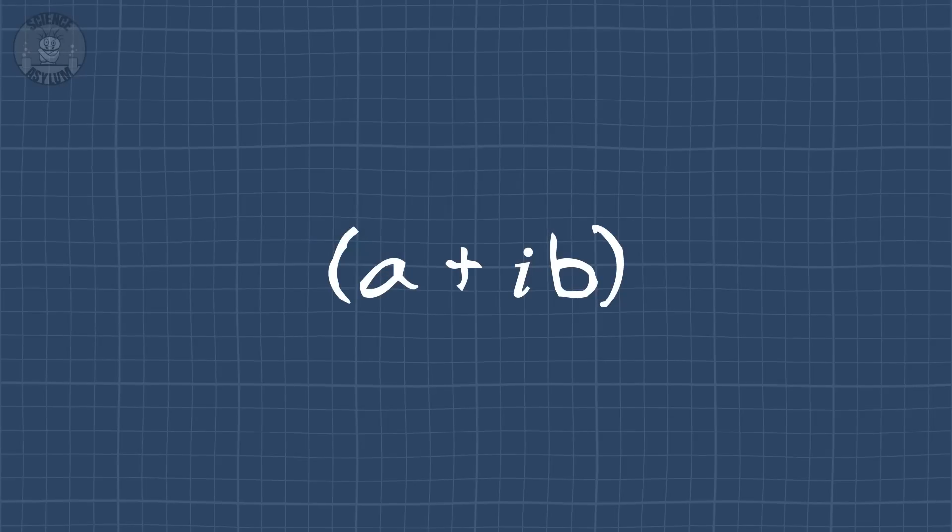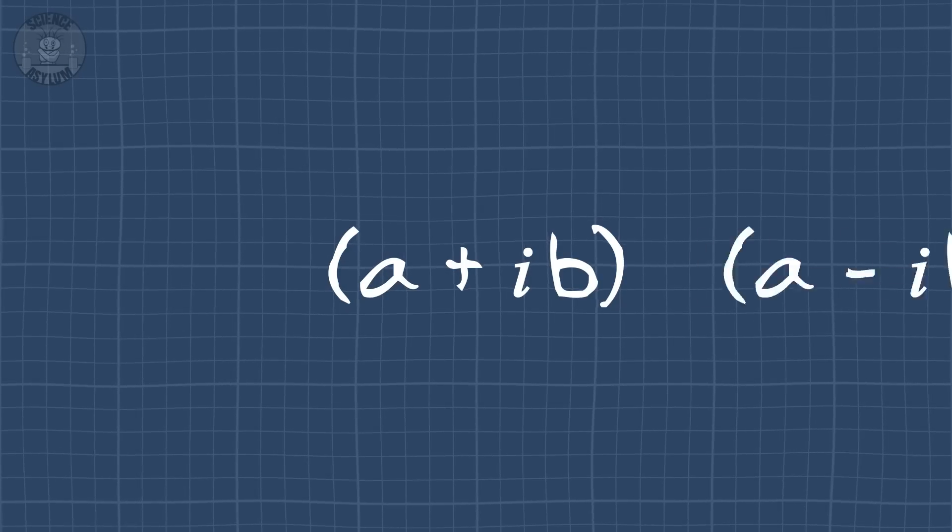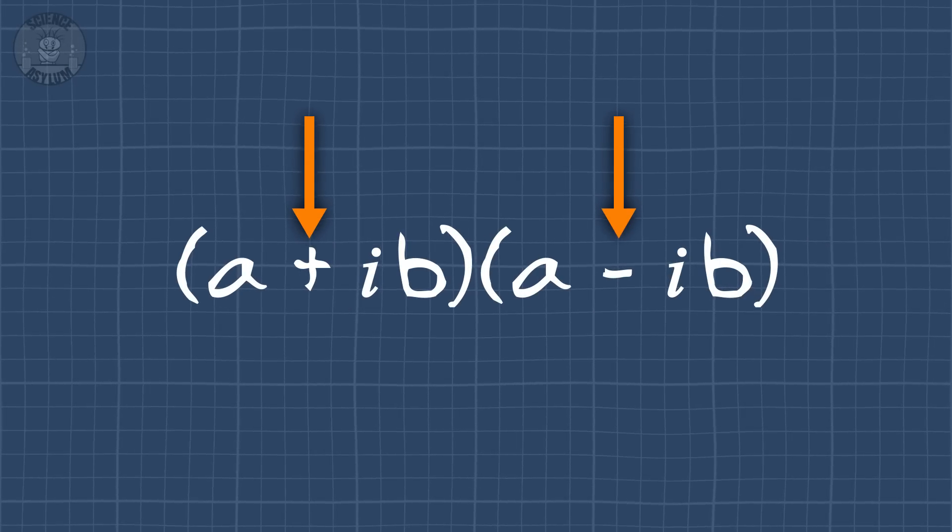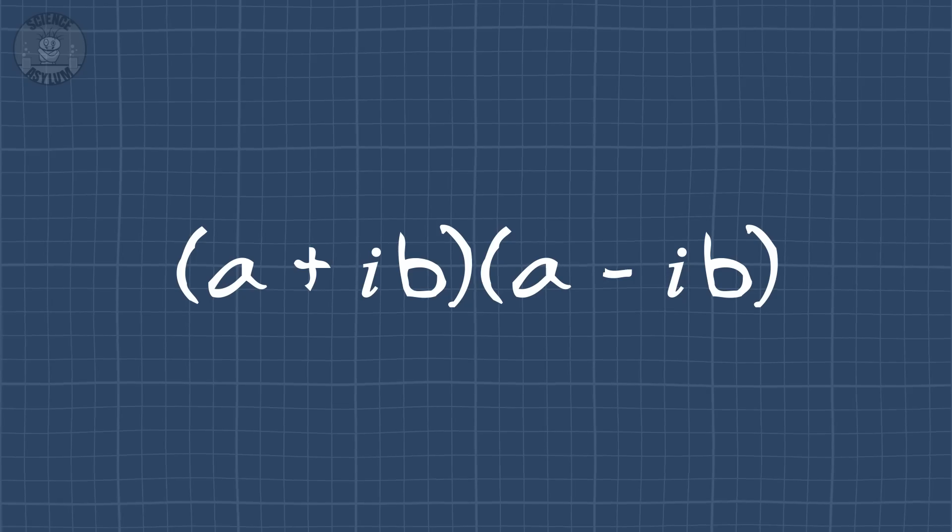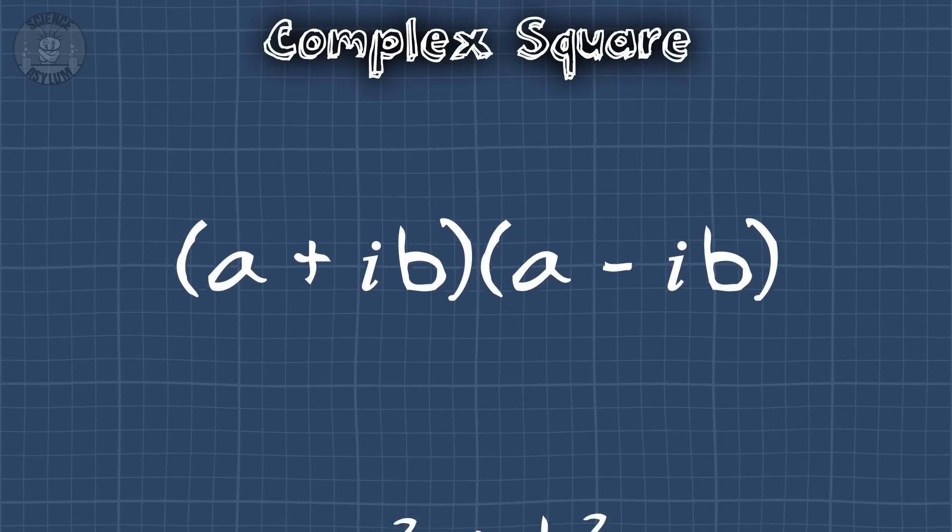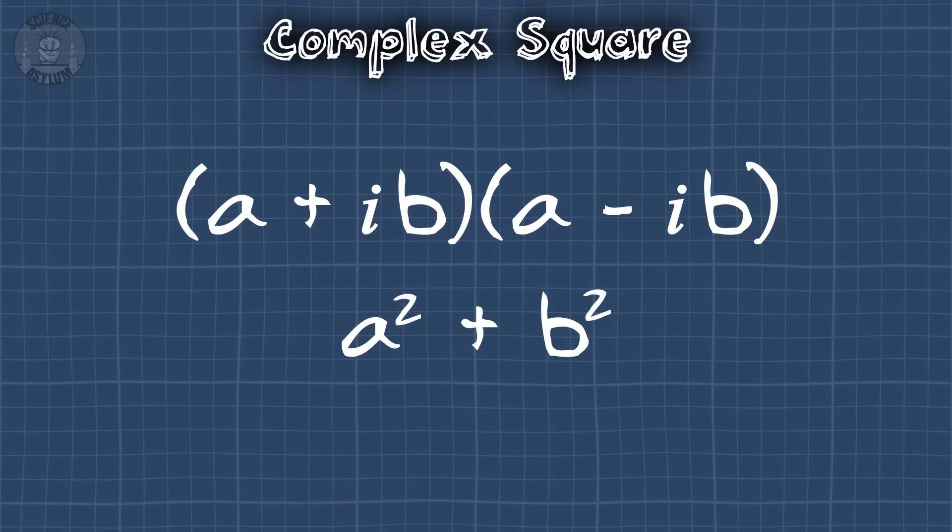The point is, the quantum wave function isn't even completely real, at least in the mathematical sense. But that doesn't mean we can't get something real out of it. If you multiply a complex number by what we call its conjugate, that's just a sign swap of the imaginary part, then you've done something called a complex square. The imaginary parts cancel and you're left with only real parts. Just got real!